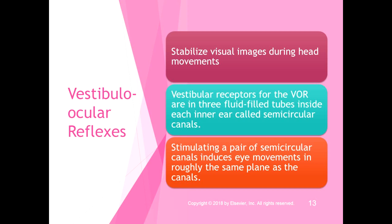The vestibular ocular reflex helps stabilize visual images during head movements. The vestibular receptors for the VOR are in the vestibular apparatus — the three fluid-filled semicircular canals inside each inner ear. Stimulating a pair of semicircular canals induces eye movements in roughly the same plane as the canals, linking the vestibular and visual systems to stabilize images during head movements.